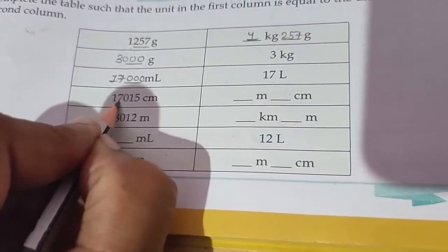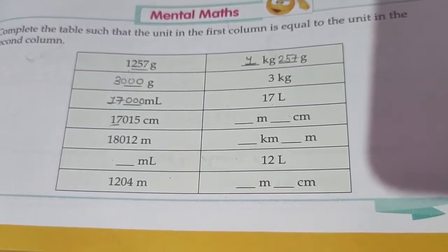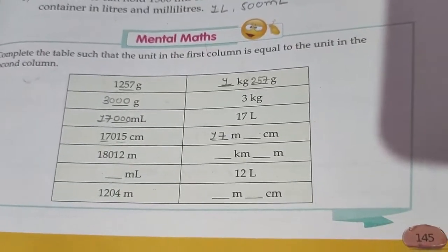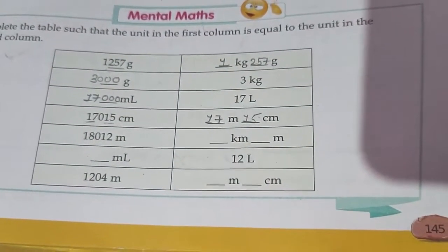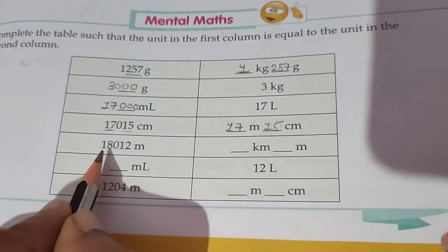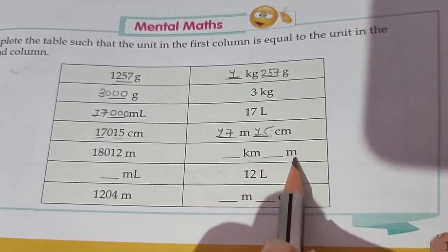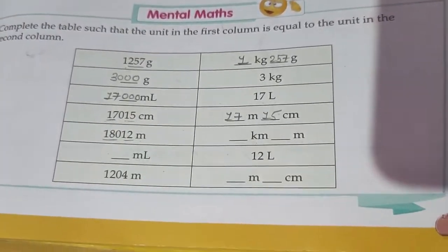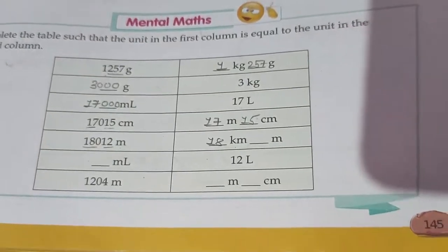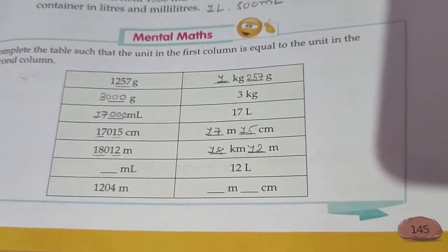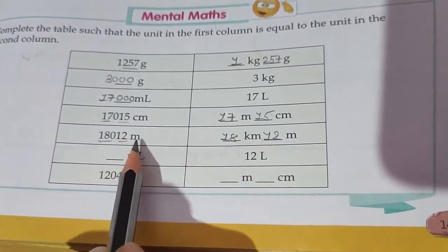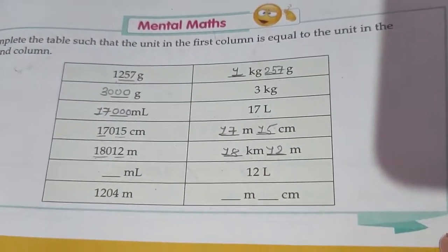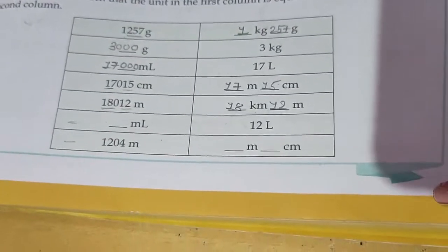Next: 1715 cm — we can separate 17, so 17 cm becomes 17 meters, and 15 cm stays as 15 cm. Then: 18,012 meters into kilometers and meters — 18,000 meters equals 18 km, and 12 meters stays as it is. So the answer is 18 km and 12 meters. The last two entries you have to complete in your homework.